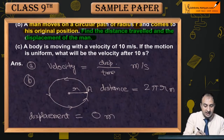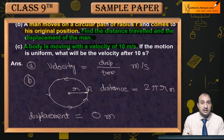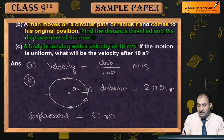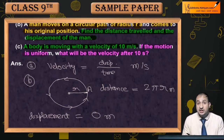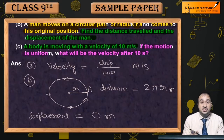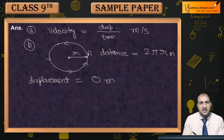अब third part C देखें — a body is moving with a velocity of 10 meter per second. एक body move कर रही है with a velocity of 10 meter per second। If the motion is uniform — motion uniform है — what will be the velocity after 10 seconds? Since motion uniform है, uniform motion वो motion होता है जहां पर velocity change नहीं होती, यानि without any acceleration। कोई acceleration नहीं हो रहा, तो velocity में change नहीं आएगा — 10 seconds हो, 20 seconds हो, 30 seconds हो, anytime।